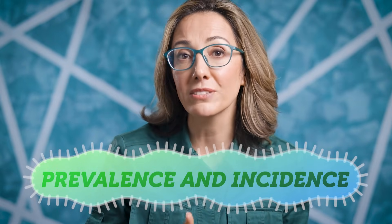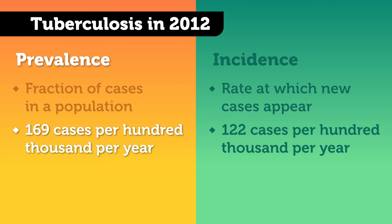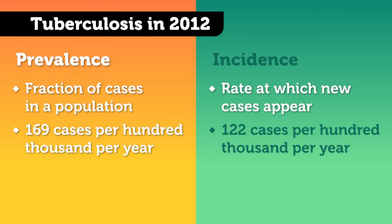Outbreaks by definition are when the number of cases of a disease exceed what we'd expect in a particular group of people. So naturally in epidemiology, we pay close attention to that number, and we do so in two ways. We consider the number of existing cases at a single point in time, and the number of new cases that develop over a specific period of time. We call these prevalence and incidence. Both often consider the number of cases as a proportion of the population. For example, say we were studying tuberculosis or TB in 2012 for the whole world. After analyzing the case numbers, we'd say that the prevalence of the disease in 2012 was 169 cases per 100,000. That means for every 100,000 people on Earth, we could expect about 169 of them to have TB at any given point in the year.